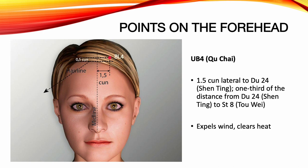Urinary Bladder 4, Chiu Cha. Location: 1.5 Sun lateral to Du 24, one-third of the distance from Du 24 to Stomach 8. Functions: expels wind, clears heat. Indications: headache, nasal obstruction, nose bleeds, blurred vision, failing vision.